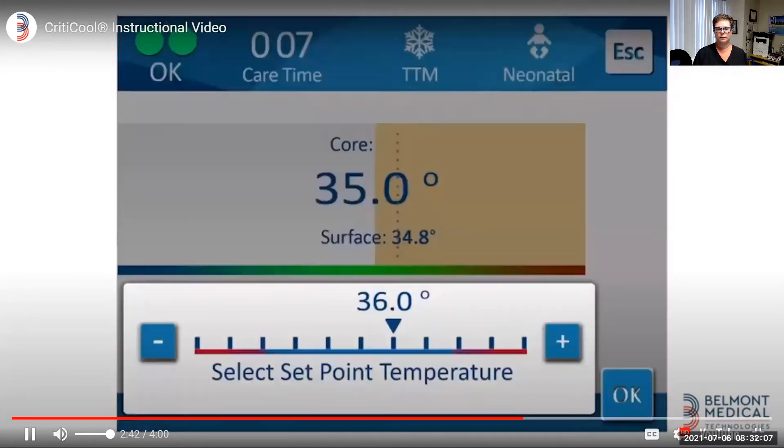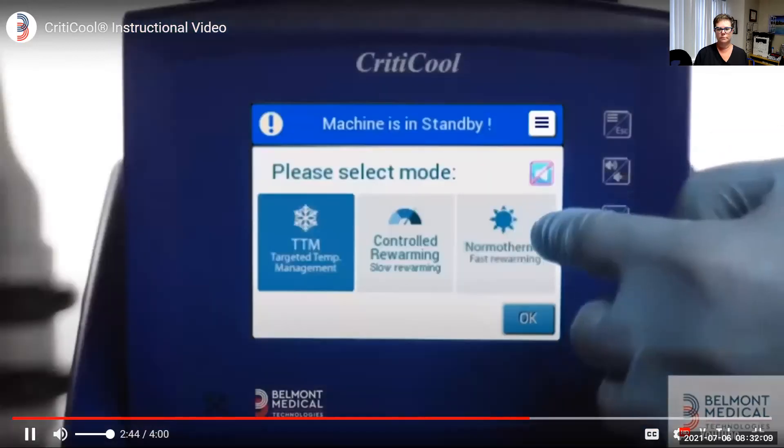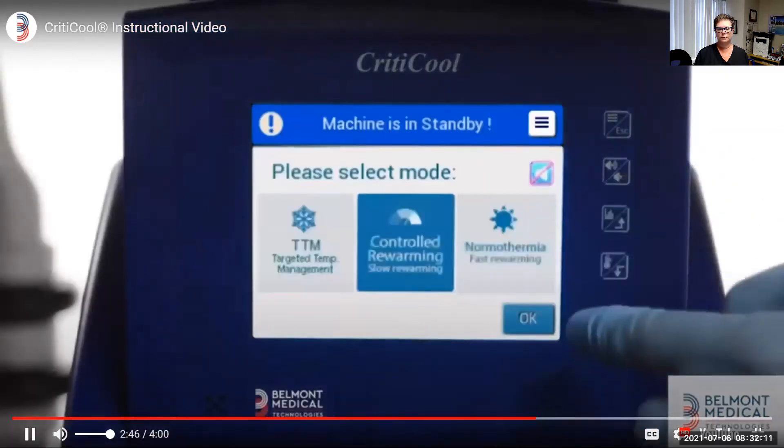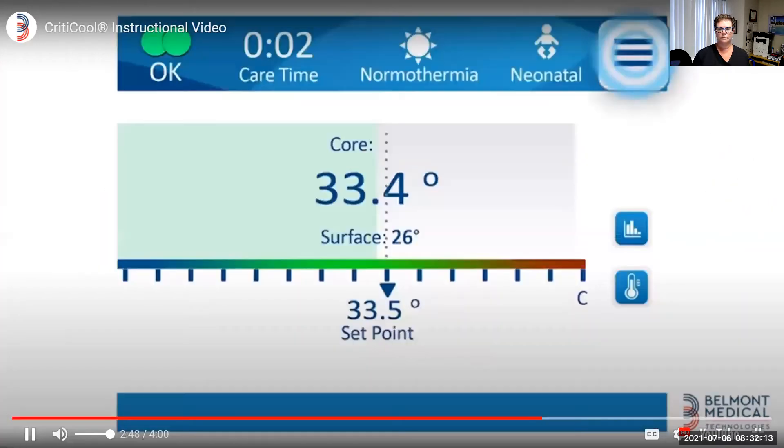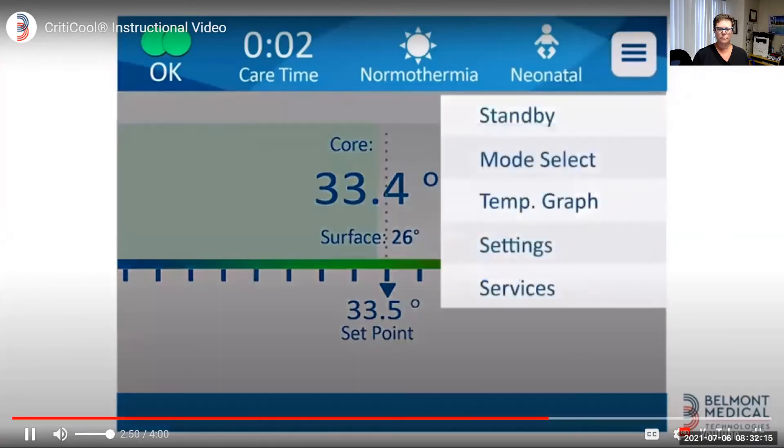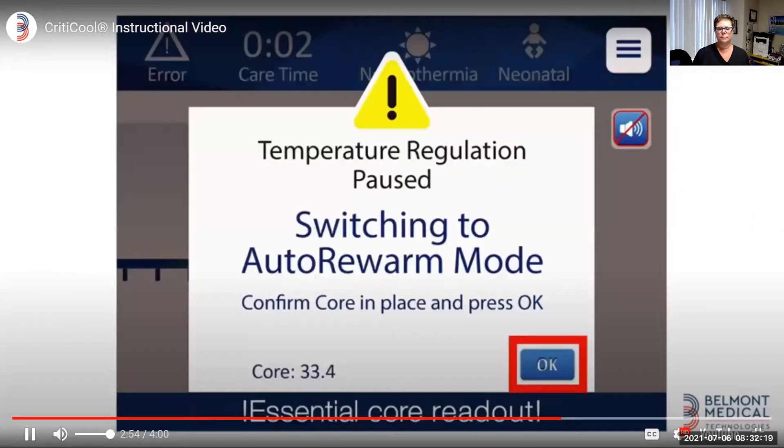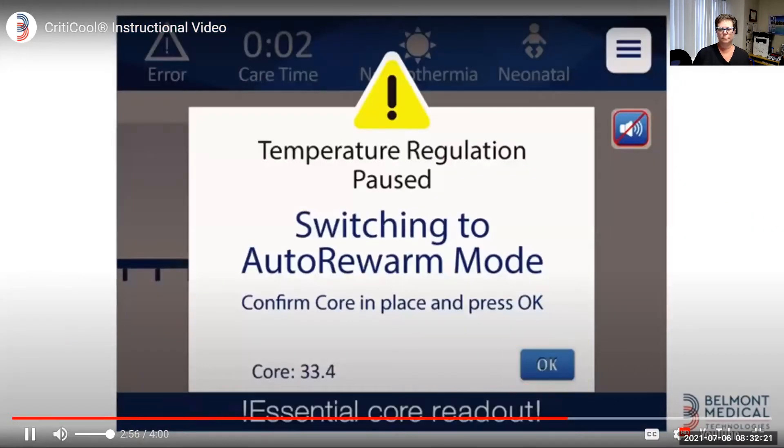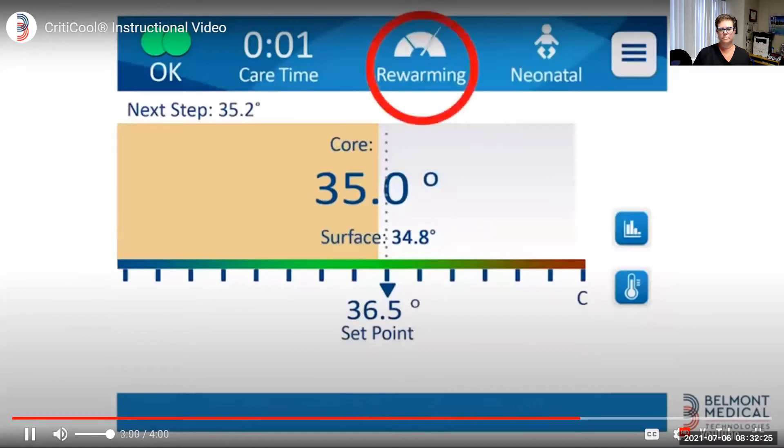The system is designed to maintain the set temperature for as long as needed. The system also offers protocols for controlled rewarming and normothermia. Touch the menu icon and in the mode select option, touch the controlled rewarming. A confirmation to the core readout temperature is essential to activate the rewarming mode. Once accepting the change, the status will be changed and you will be able to see that you are in rewarming mode.